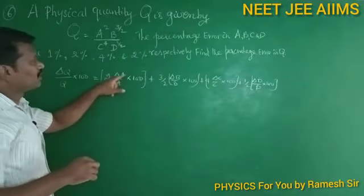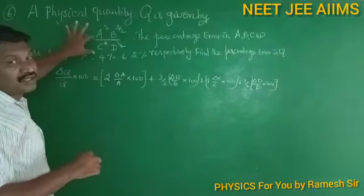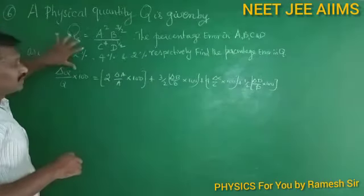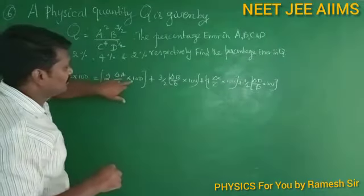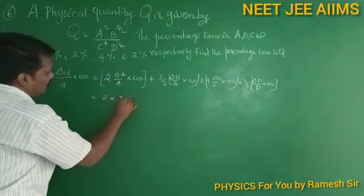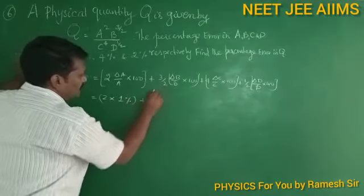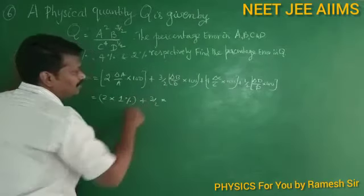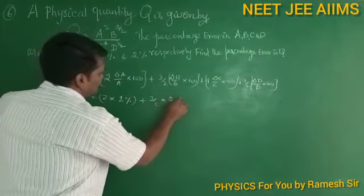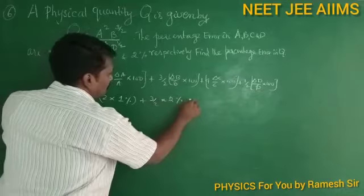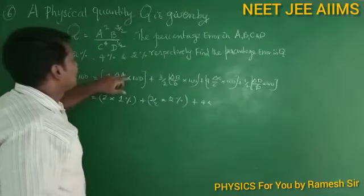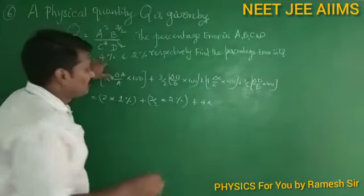We know that del a by a into 100 is the error. Del a by a into 100 is 1 percent, so 2 into 1 equals 2. Plus 3/2 into 2 equals 3. Plus 4 into 4 equals 16 percentage.